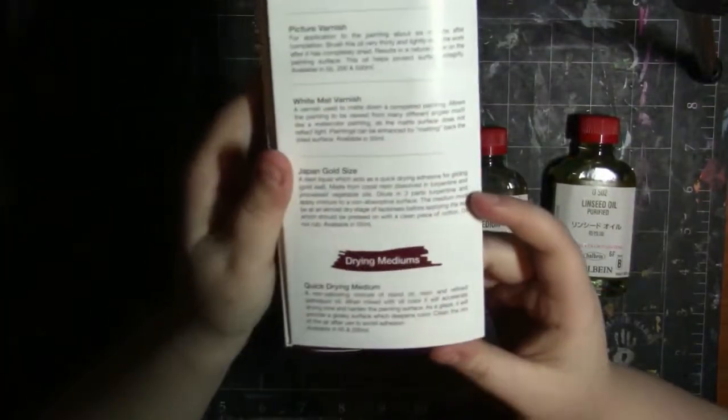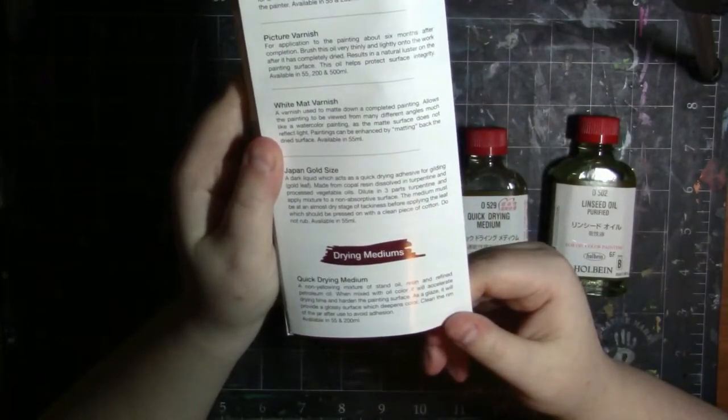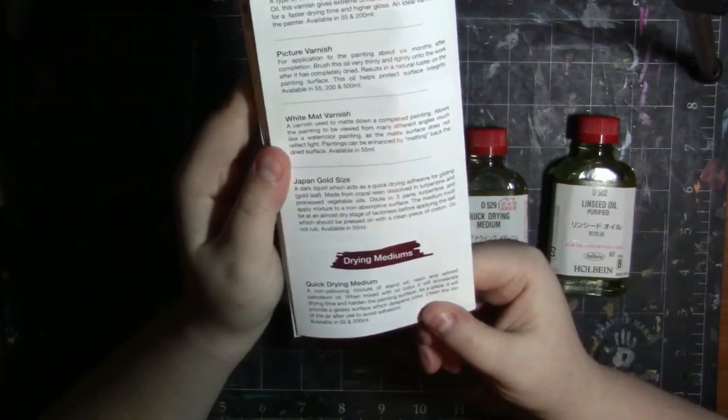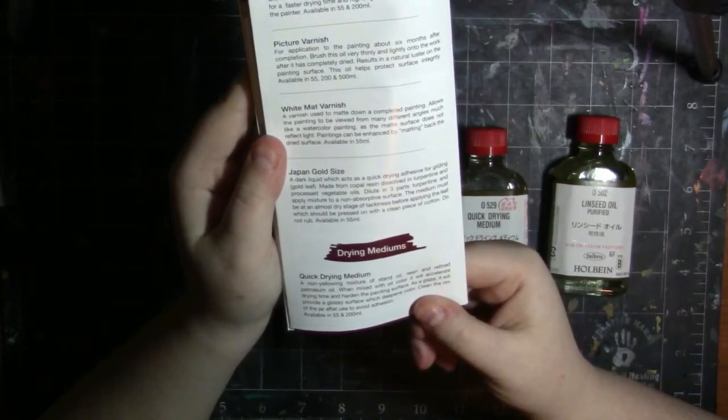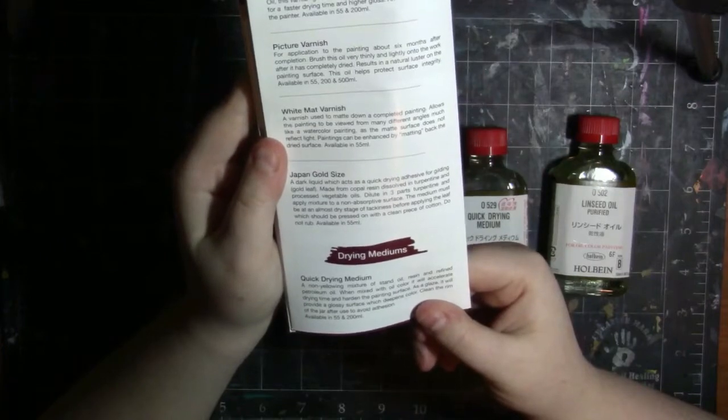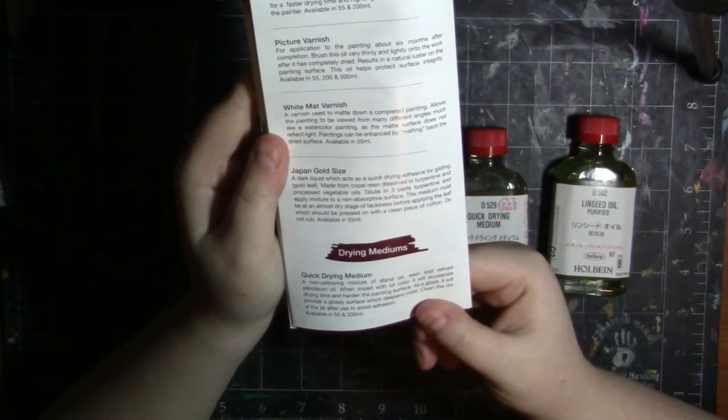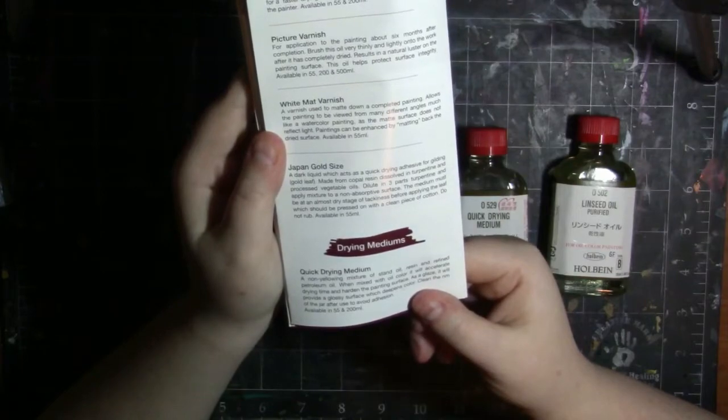And then they have the quick drying medium. A non-yellowing mixture of stand oil, resin, and refined petroleum oil. When mixed with oil color, it will accelerate drying time and harden the painting surface. As a glaze, it will provide a glossy surface which deepens the color. Clean the room of the jar to avoid adhesion. Available in 55 and 200 milliliters.